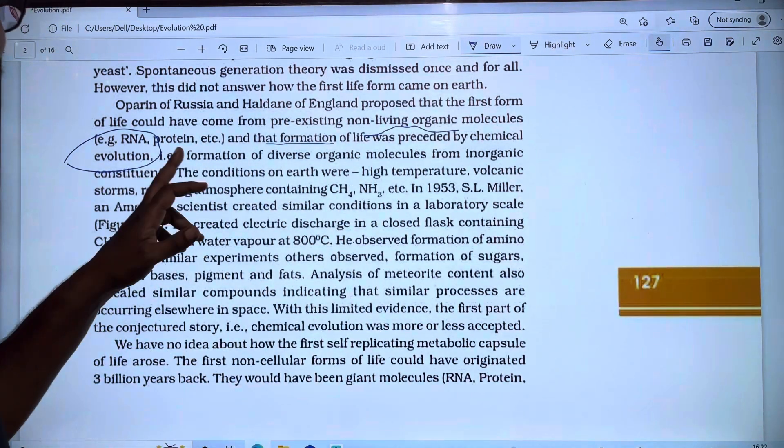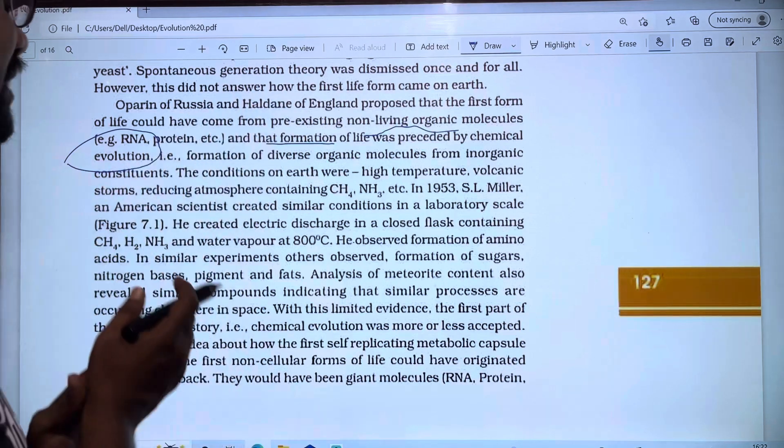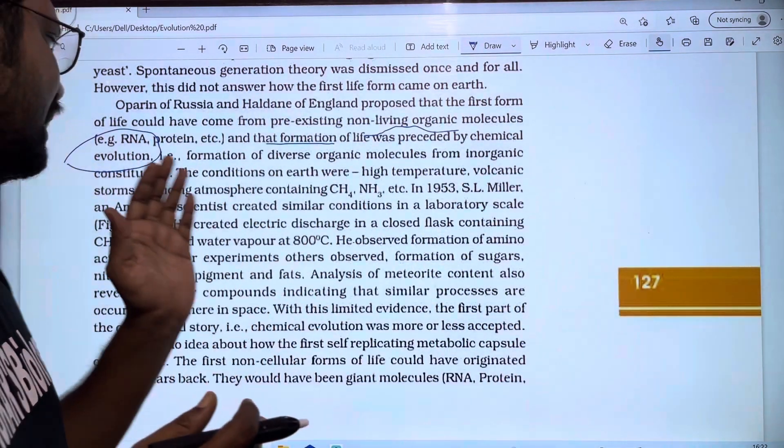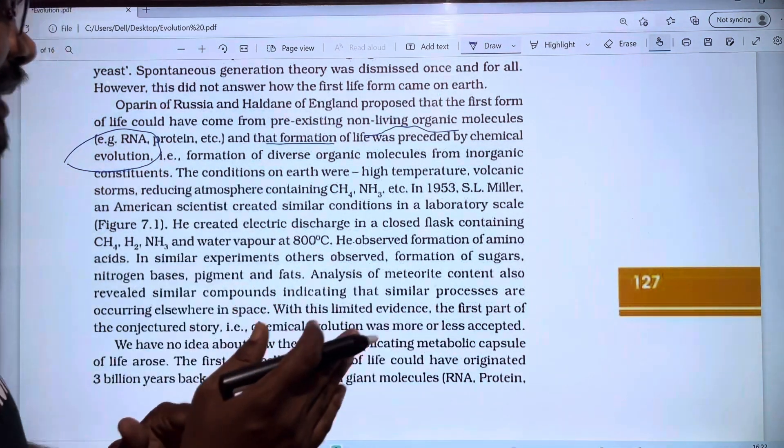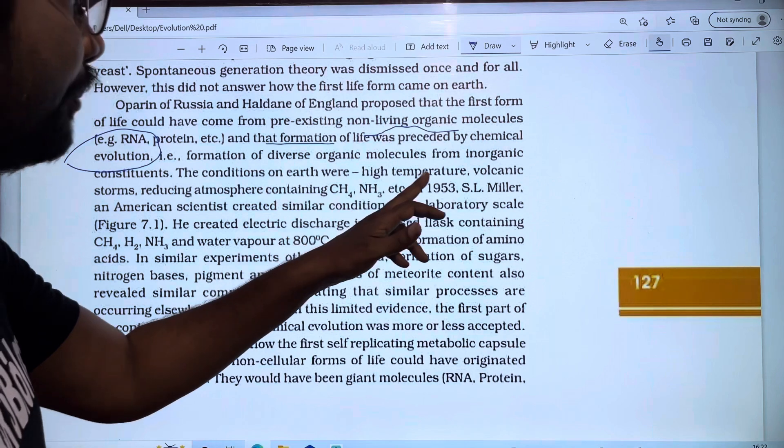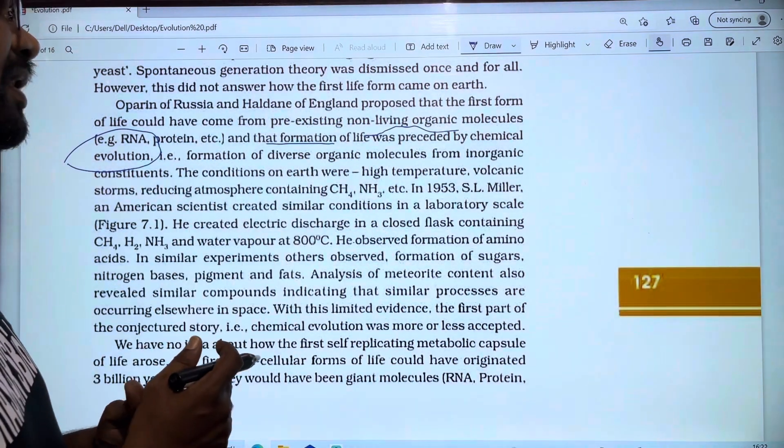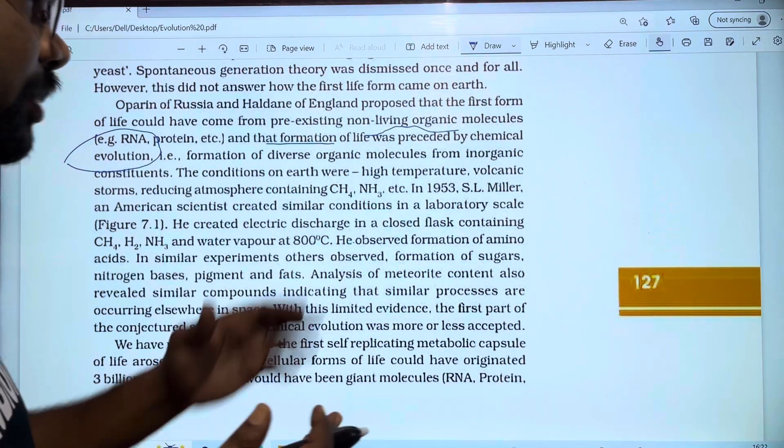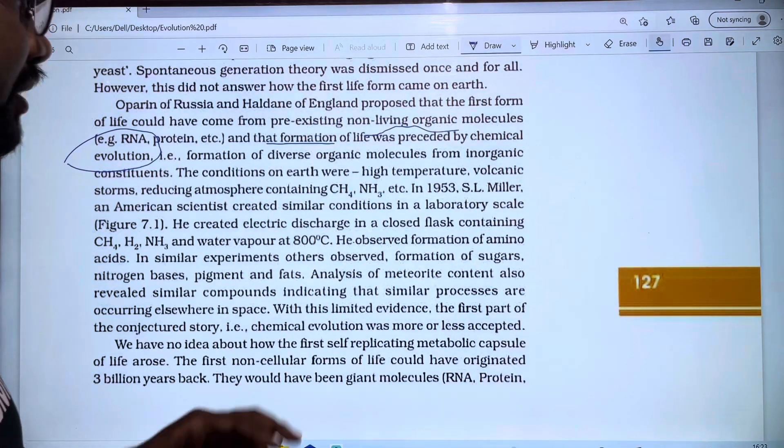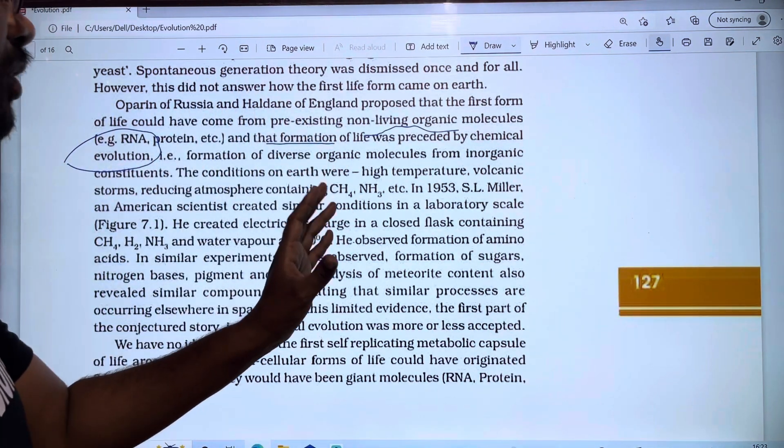Chemical evolution is the formation of diverse organic molecules from inorganic constituents. The conditions on early Earth included high temperature, volcanic storms, and a reducing atmosphere containing CH4, NH3, etc. In Big Bang theory, we see high temperature and volcanic storms formed initially. However, this process wasn't directly observed, so we had to conduct an experiment in the laboratory.